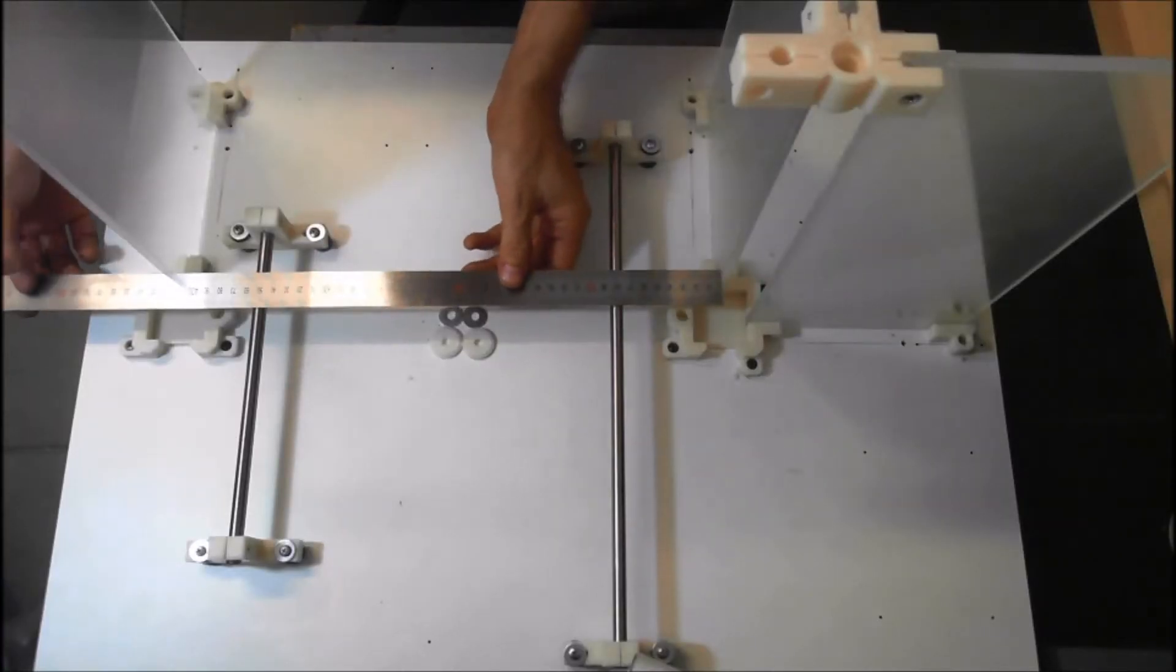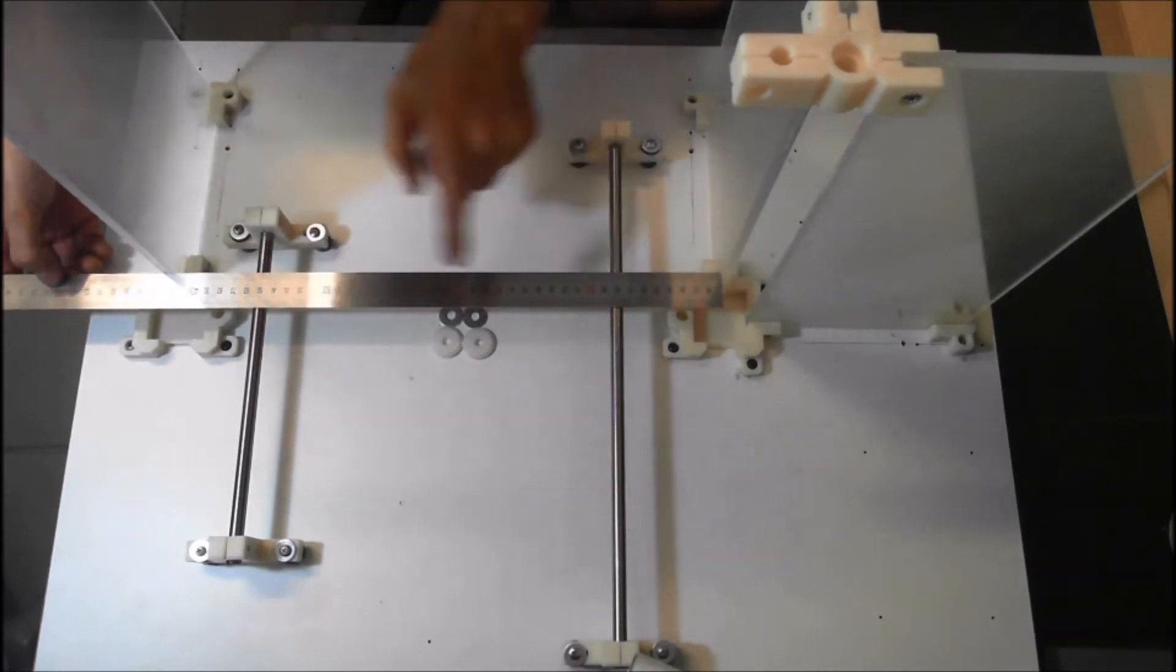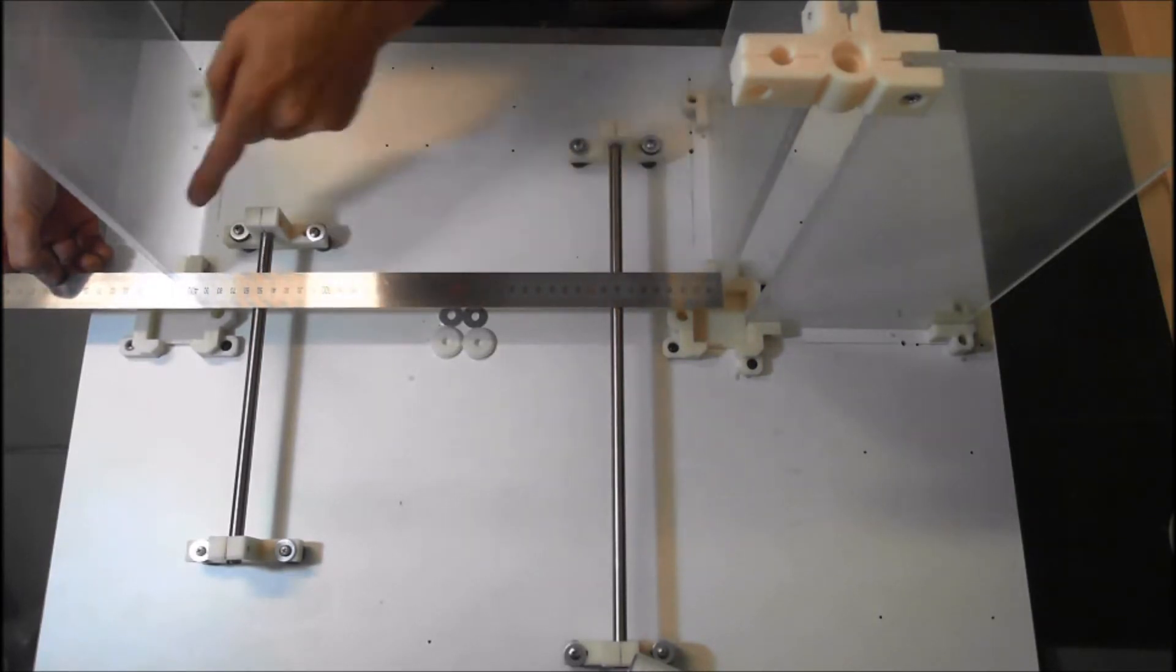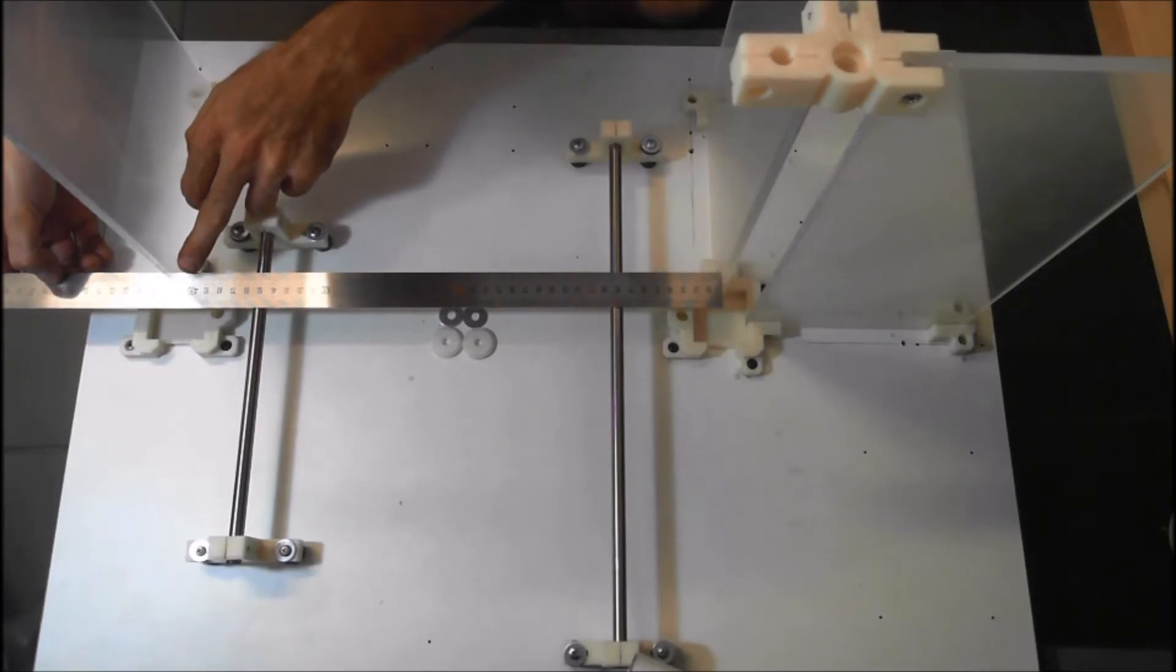Next we're going to measure the distance between the two vertical plates. I'm just going to take that measurement now, and we measure it from the bottom just to get the accuracy. So we're measuring 418.